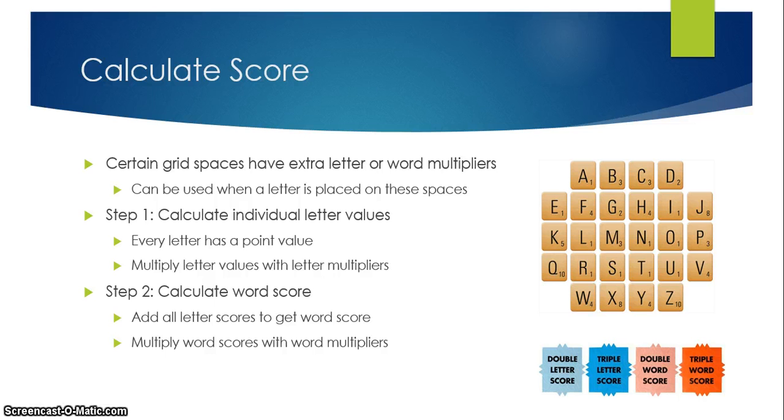Now that we have the word we can calculate the score. As I said before each letter has a certain point value and there are certain grid squares on the board that correspond to word or letter multipliers. First since I know what the letters are, I calculate the individual letter values. So that would be in case there was a letter multiplier, I multiply the letter multiplier with the individual letter that it was applicable to. And then after that I sum all the letter values together to have the word score and then multiply the word score with any bonus word multipliers that the word itself sat on on the board. And here's a picture of how the letter and word multipliers look like on the board.